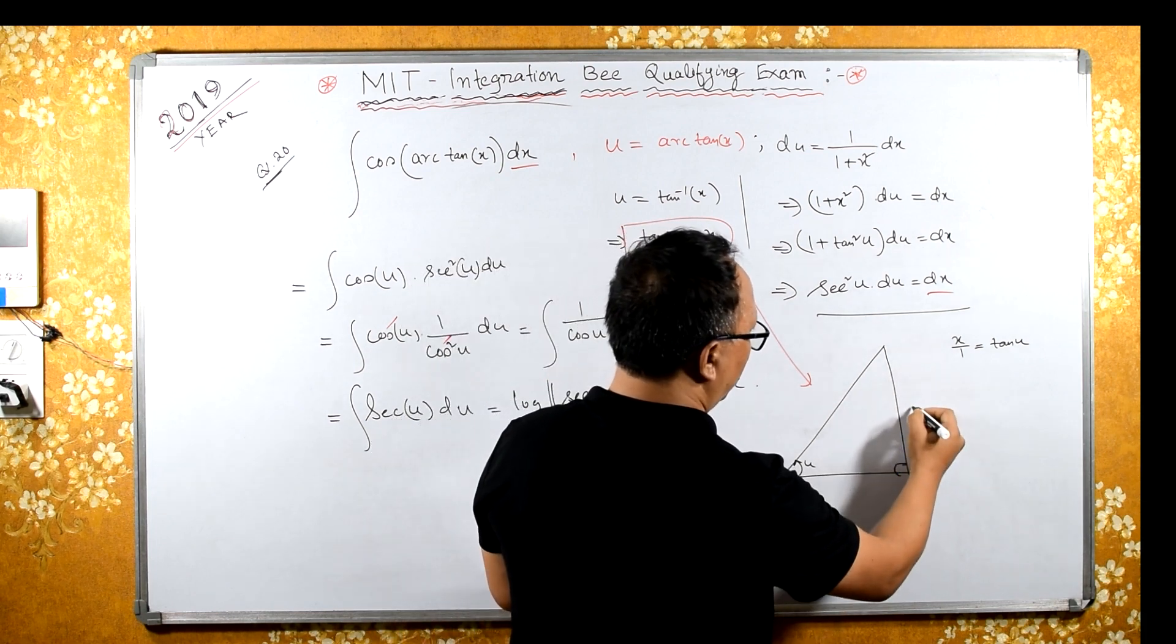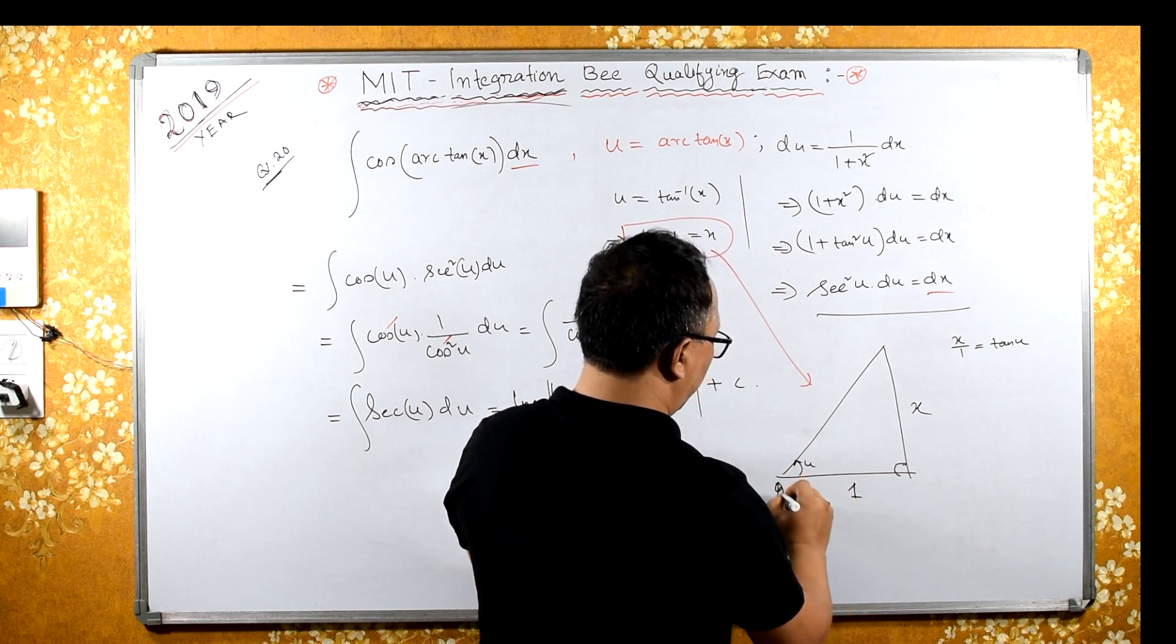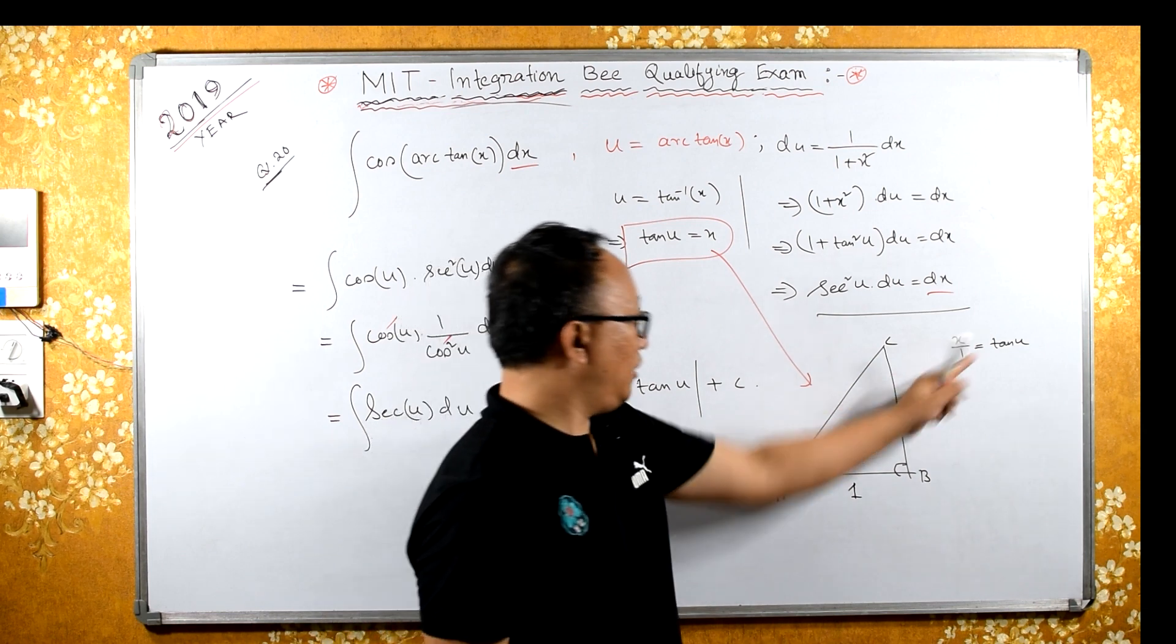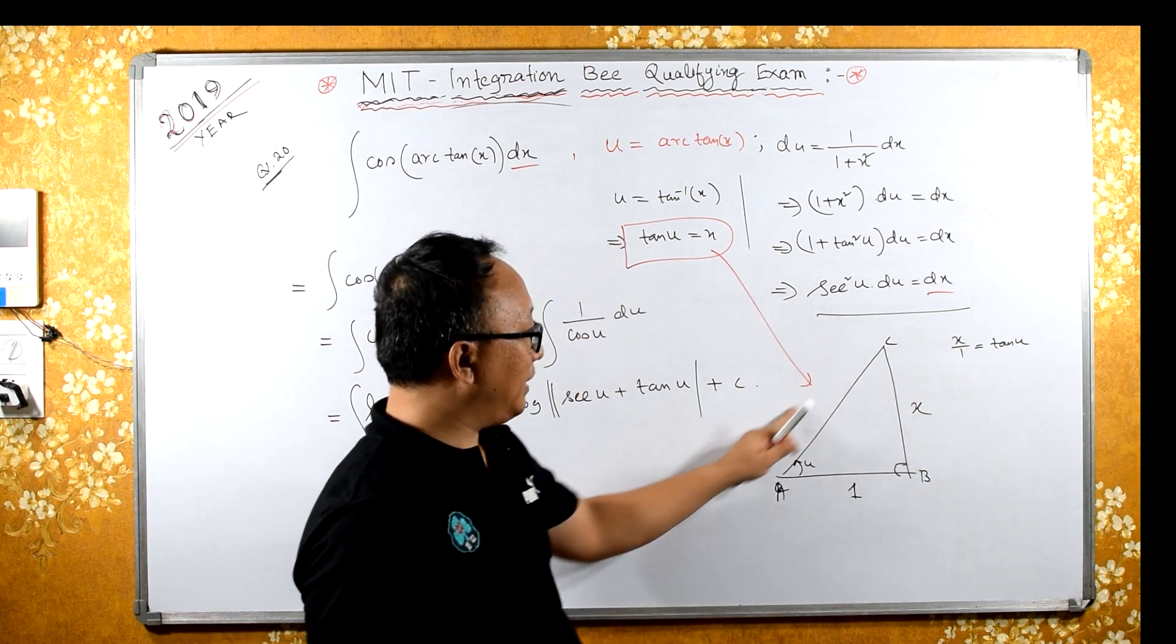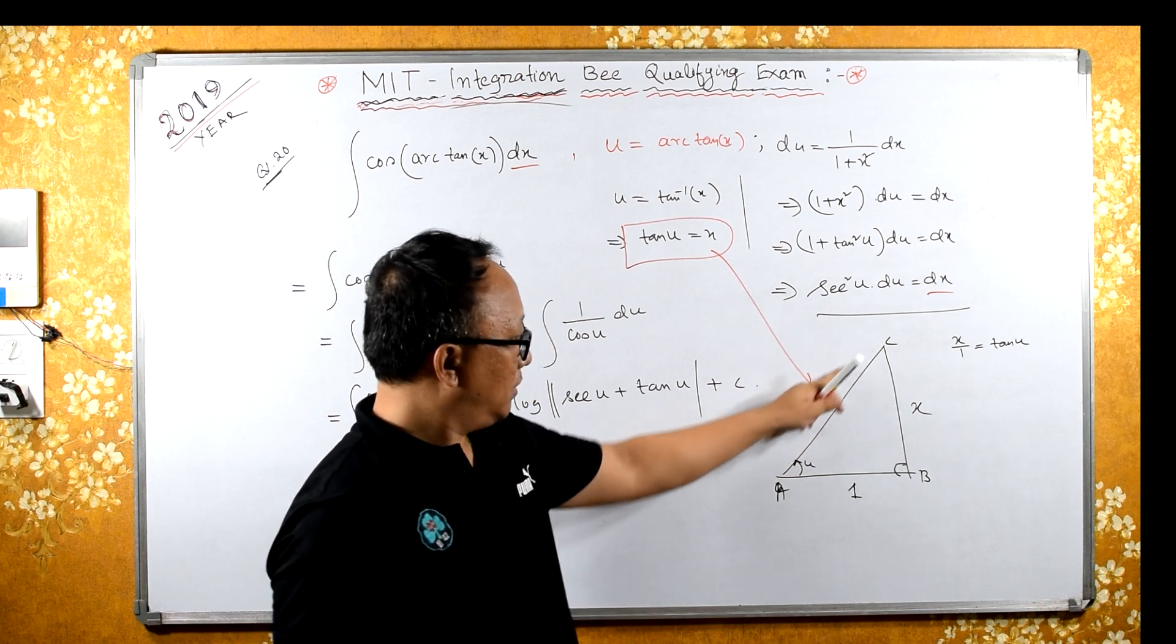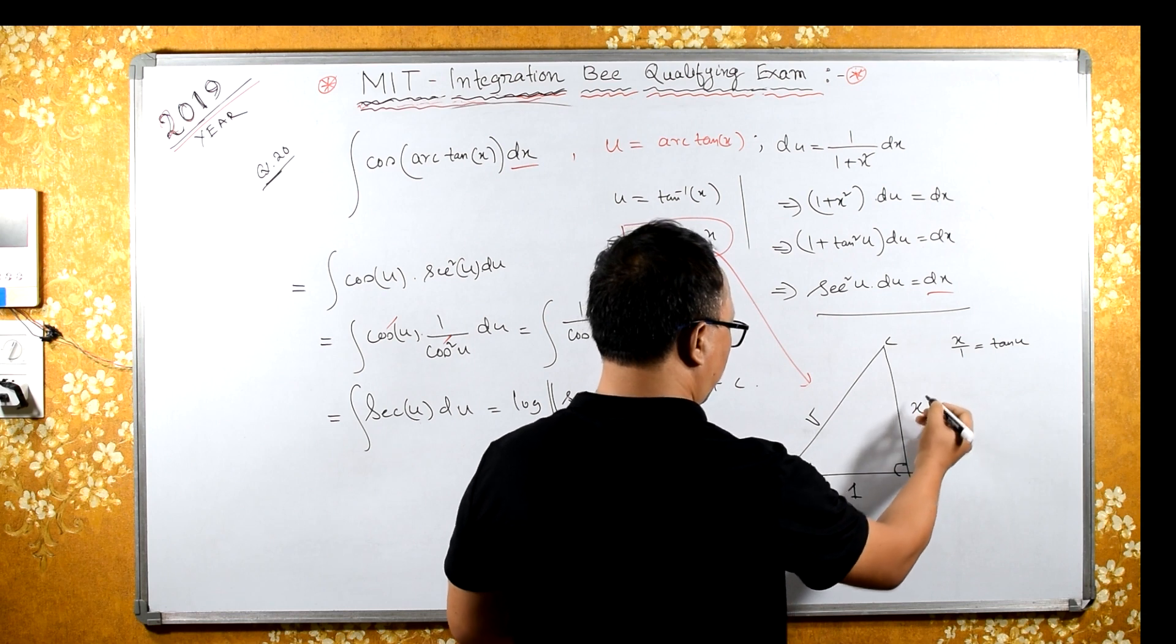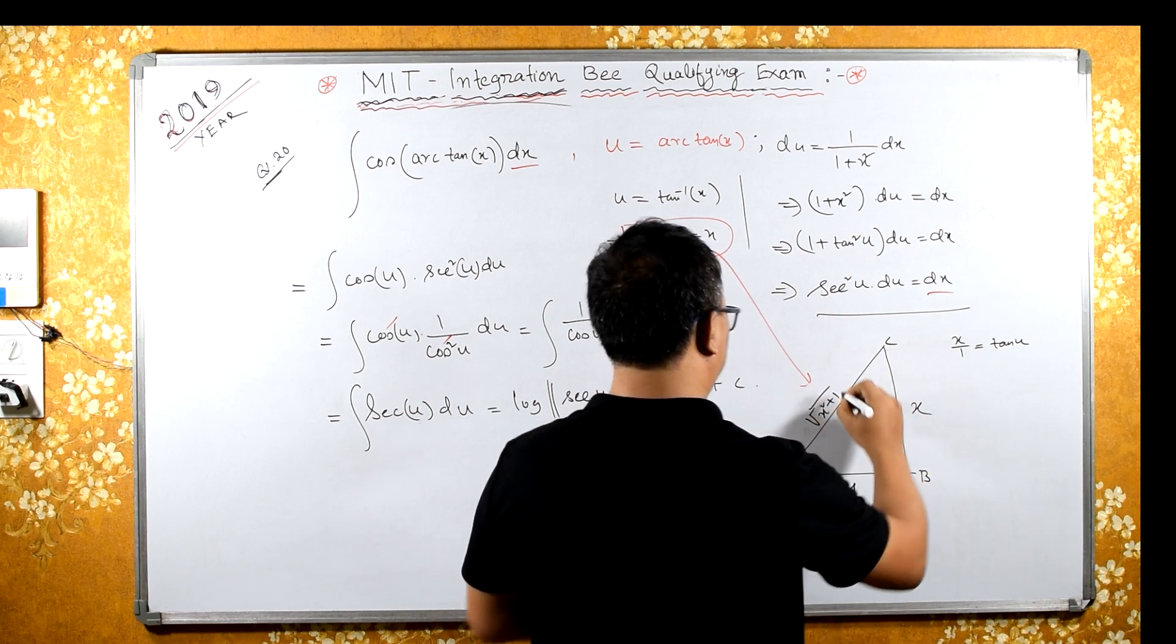This is height. Therefore x here, 1 here. This is a triangle. Tan of u is height upon base. Therefore we can find this line by Pythagorean theorem. This is square root of x squared plus 1.